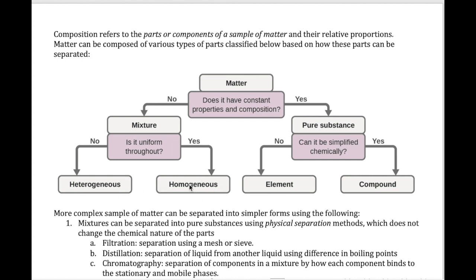Mixtures can be separated into homogeneous and heterogeneous mixtures. A homogeneous mixture is one where, when you look at it, you can't tell that there are two different things in there — it's differentiated by observation. For example, if you mix salt and water and look at that solution, it just looks like pure water. The only way you can tell the difference is by tasting it — pure water doesn't taste like anything, whereas salt water tastes salty.